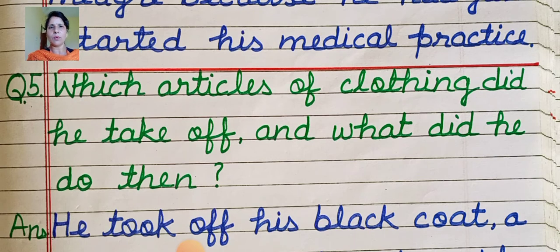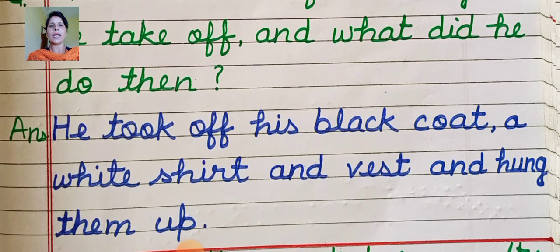Which articles of clothing did he take off, and what did he do then? He took off his black coat, a white shirt and waist, and hung them up — unhone utaar kar kahi hook par tange diye.